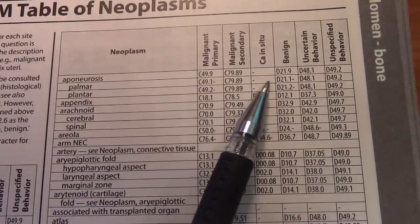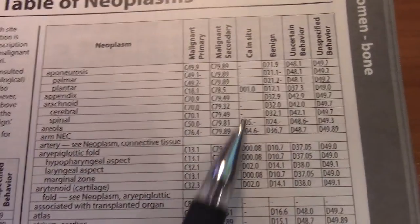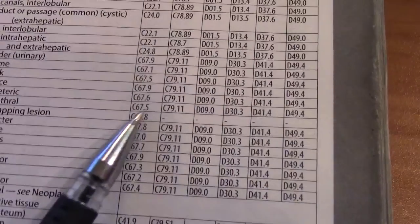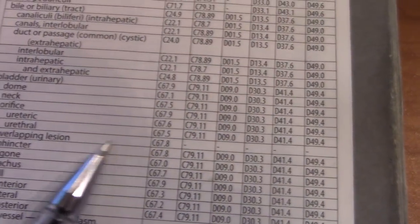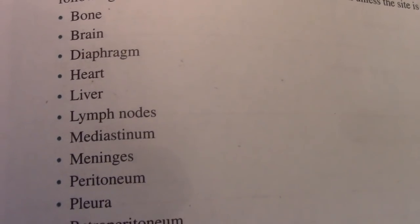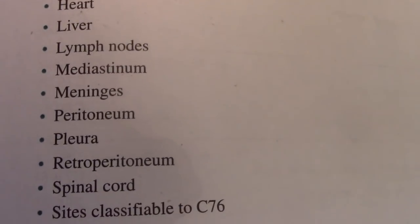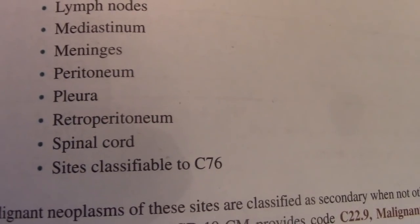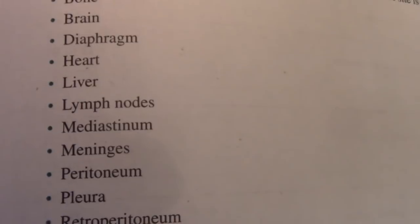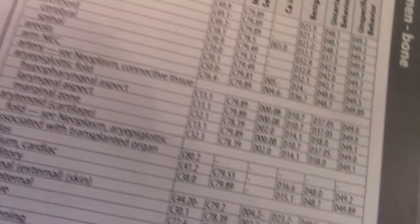When you see a gap in the table, those cancers don't tend to be in situ. And there are some cancers that are only secondary cancers — bone, brain, diaphragm, heart, liver, lymph nodes, mediastinum, meninges, peritoneum, pleura, retroperitoneum, spinal cord, or sites classified to C76. These are your secondary sites. When you see these, you know that you have to then identify where the primary site is.